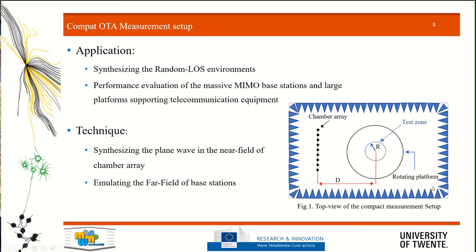We want to make it more compact in order to decrease the cost and expenses of implementation of anechoic chambers. In order to reach this goal, we have to put the antenna under test closer to the chamber array. In other words, we have to put the antenna under test in the near field of the chamber array, but meanwhile we have to emulate far field conditions over the quiet zone, so we have to synthesize a plane wave within the quiet zone. I want to focus on the design of the chamber array in order to have a planar wave in the near field of the chamber array.